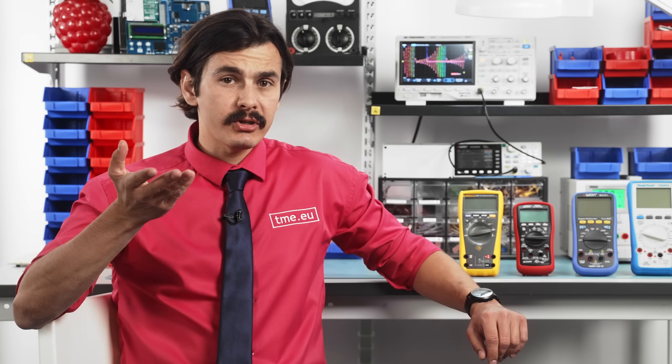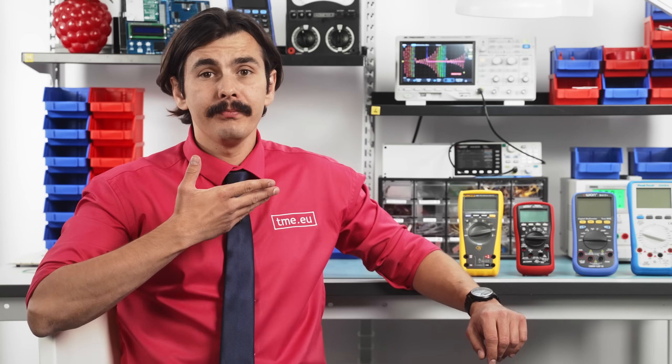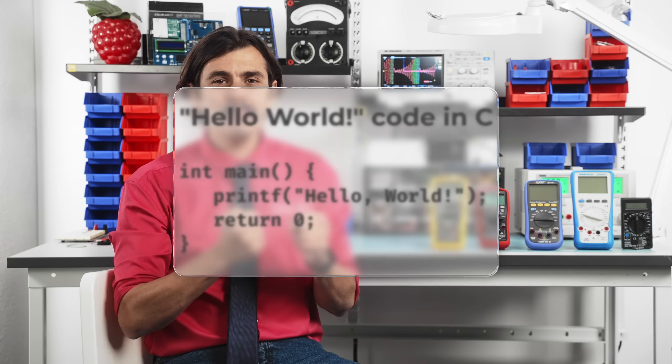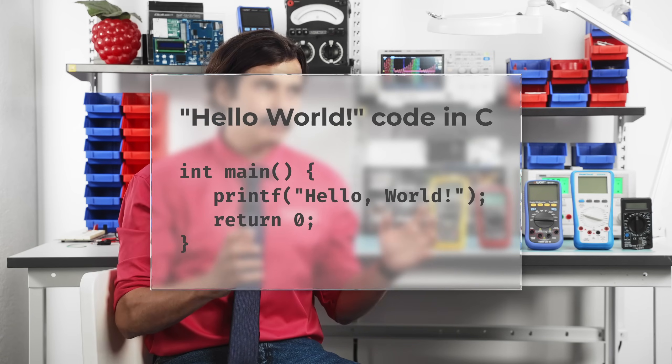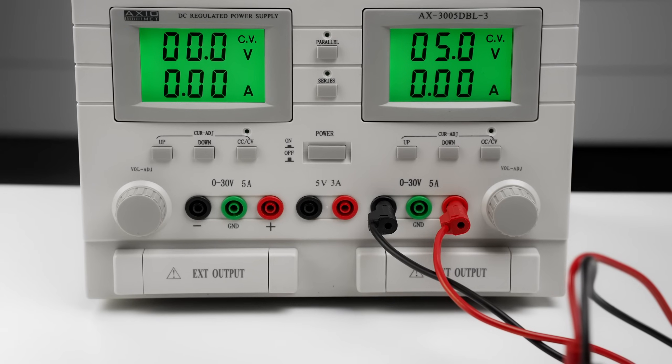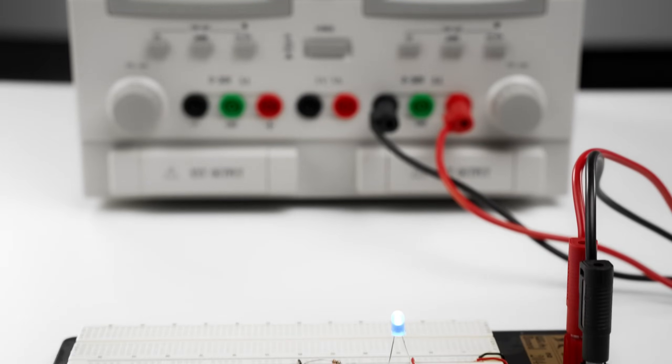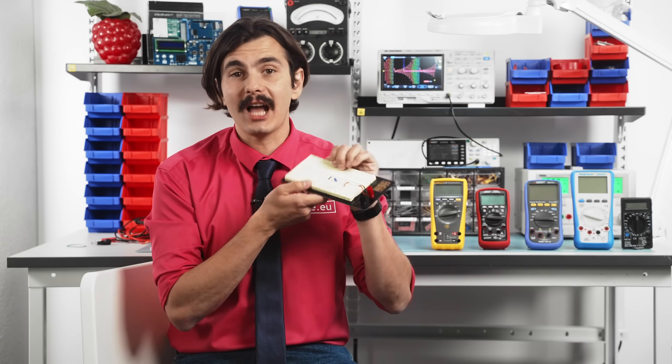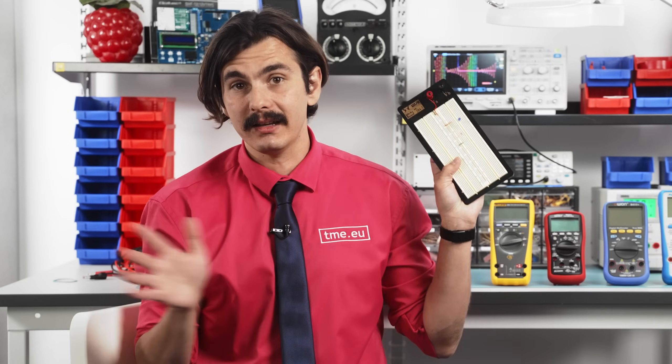The best way to demonstrate how to measure with a multimeter is with an example. If hello world is the simplest example for coding, then turning on a light bulb is the equivalent one for sure. So let's use a simple circuit with a power source, a resistor, and an LED to demonstrate how to measure voltage, current, and resistance. This is something that I did five minutes ago.